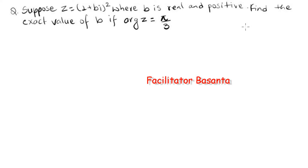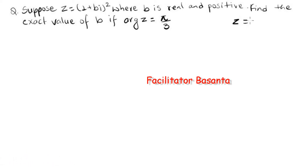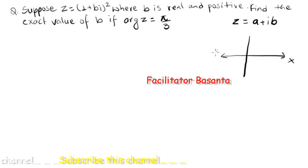In this video, I am going to solve a question related to the argument of a complex number. Suppose a complex number is given by z equals a plus bi. We can draw a figure — here is the x-axis and this one is the y-axis, with O as the origin.